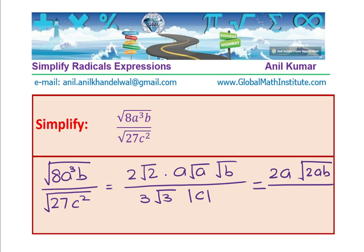And in the denominator, we have 3√3 and absolute value of c. Correct? Well, most of you could go directly from here to this.